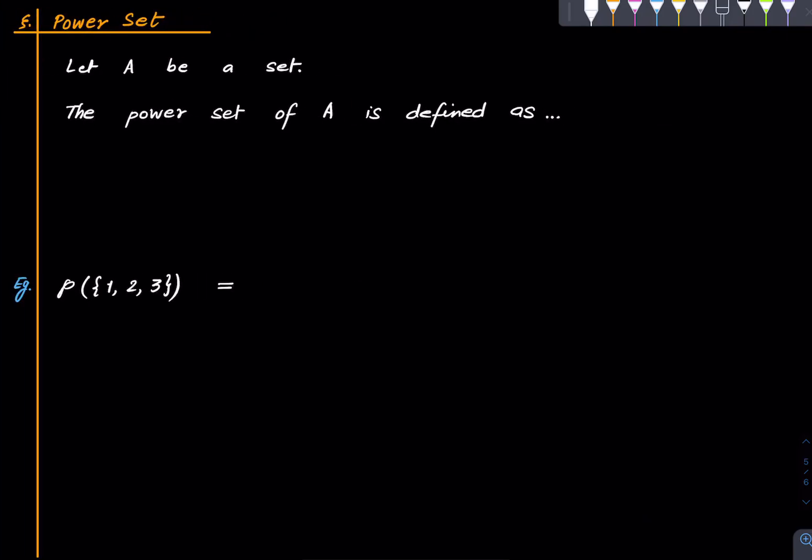Now we come to the notion of a power set. Let A be any set. The power set of A is defined as the collection or the set of all the subsets of A. So A is a set, hence it has subsets. Collect all possible subsets of it, including the empty set. That is the power set.